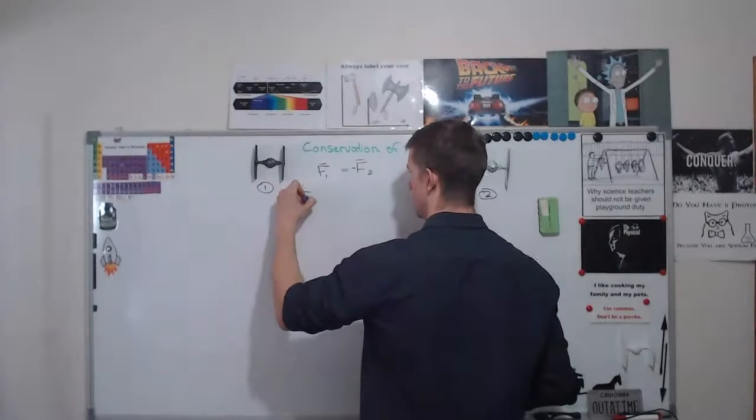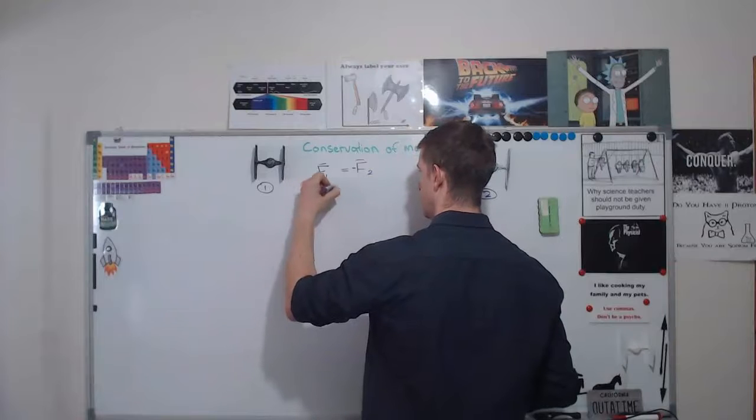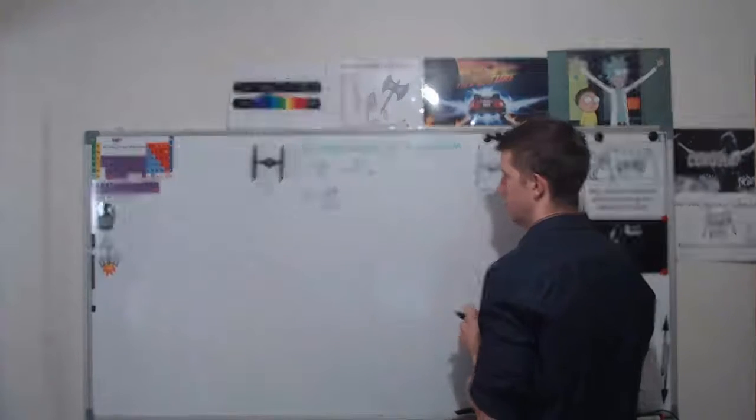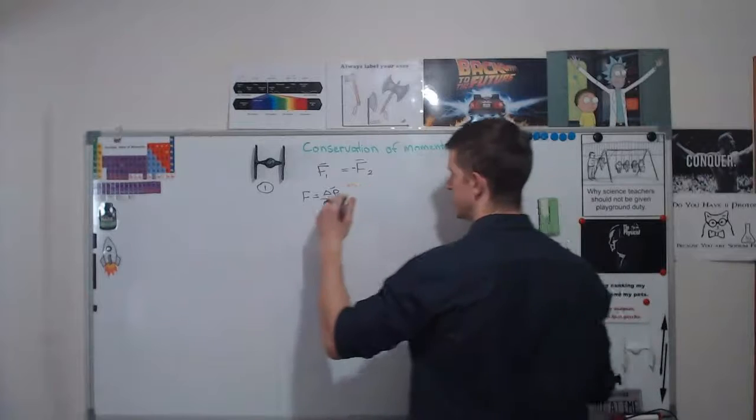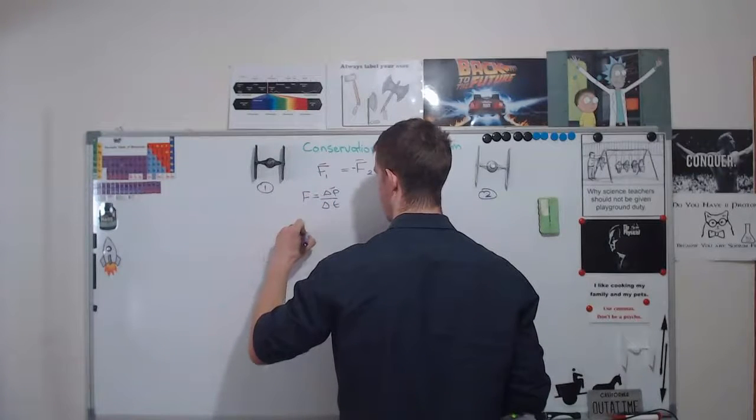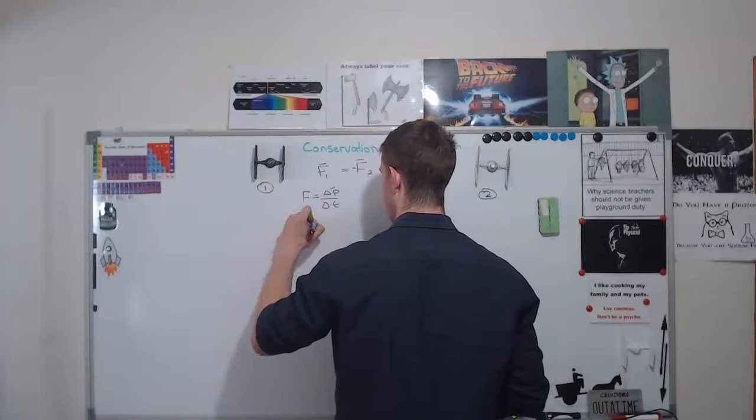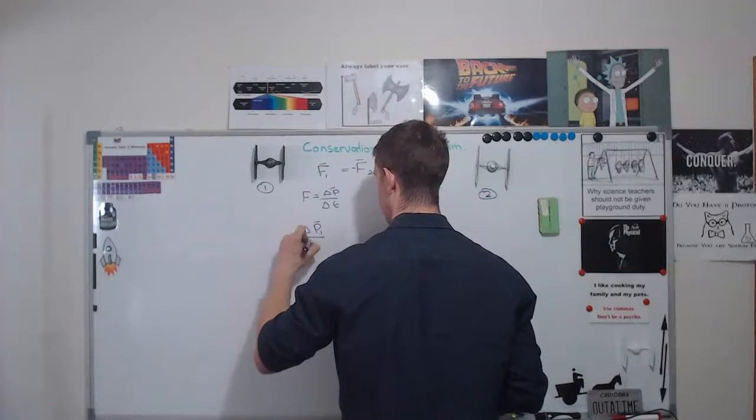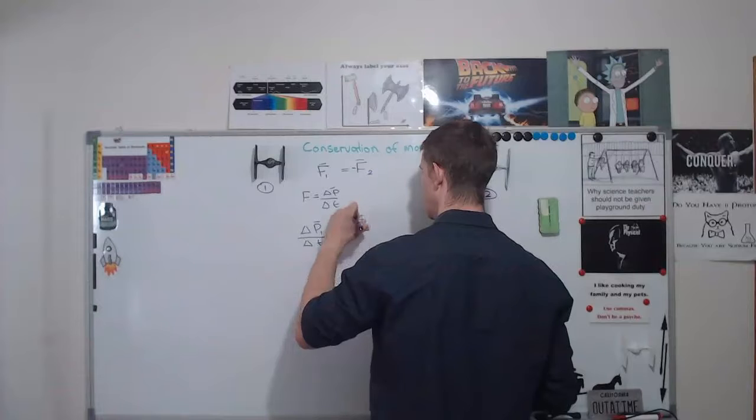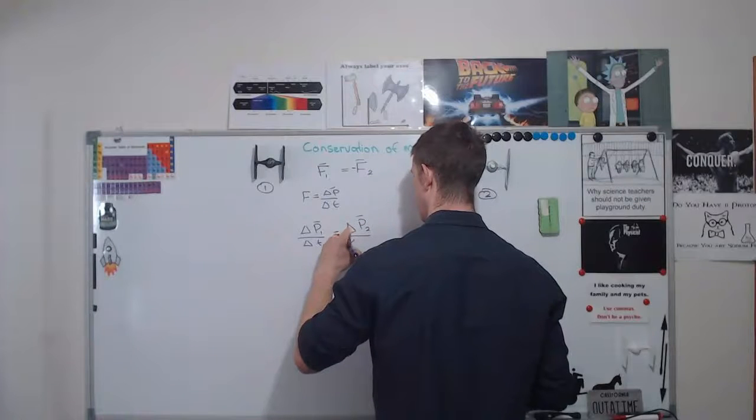So now if I change the term, I know that force is equal to the change in momentum over the change in time from what we talked about earlier. Therefore, I can rewrite this expression in terms of F in terms of momentum. So the change in momentum 1 over time is going to be equal to the change in momentum 2 over time.